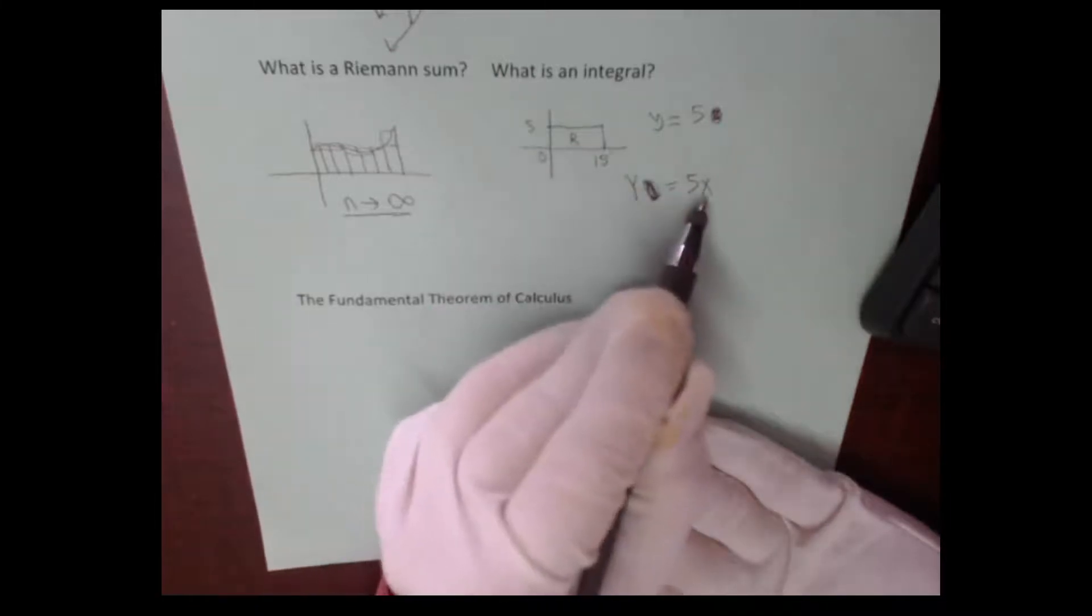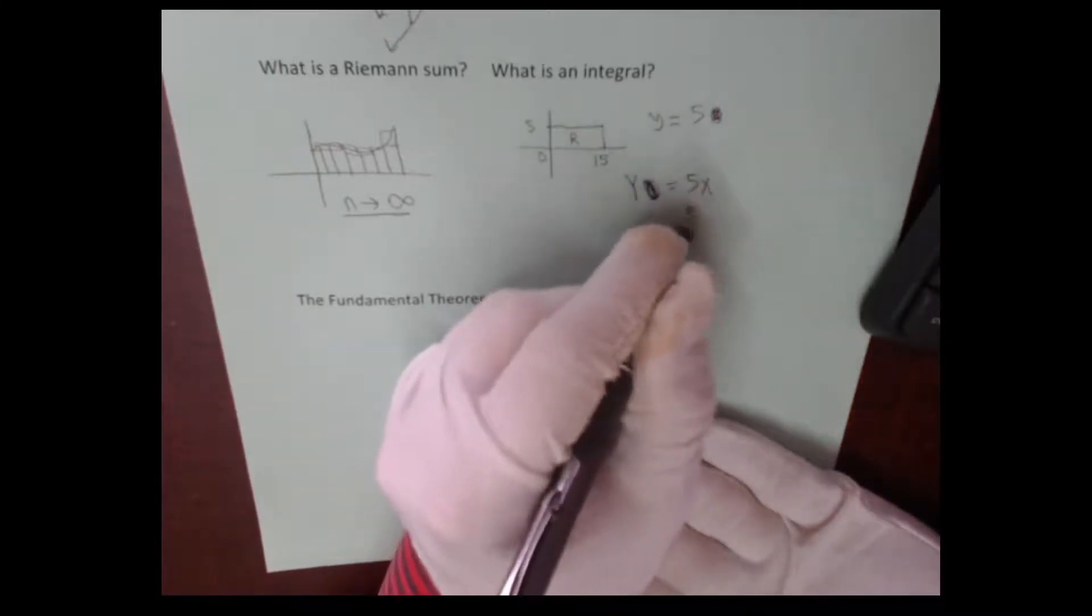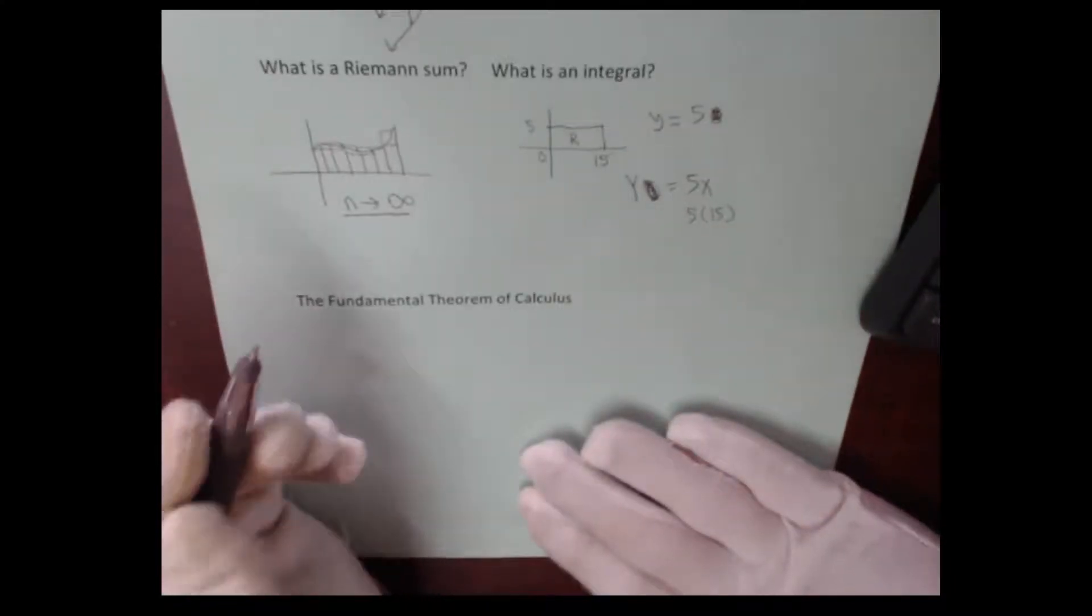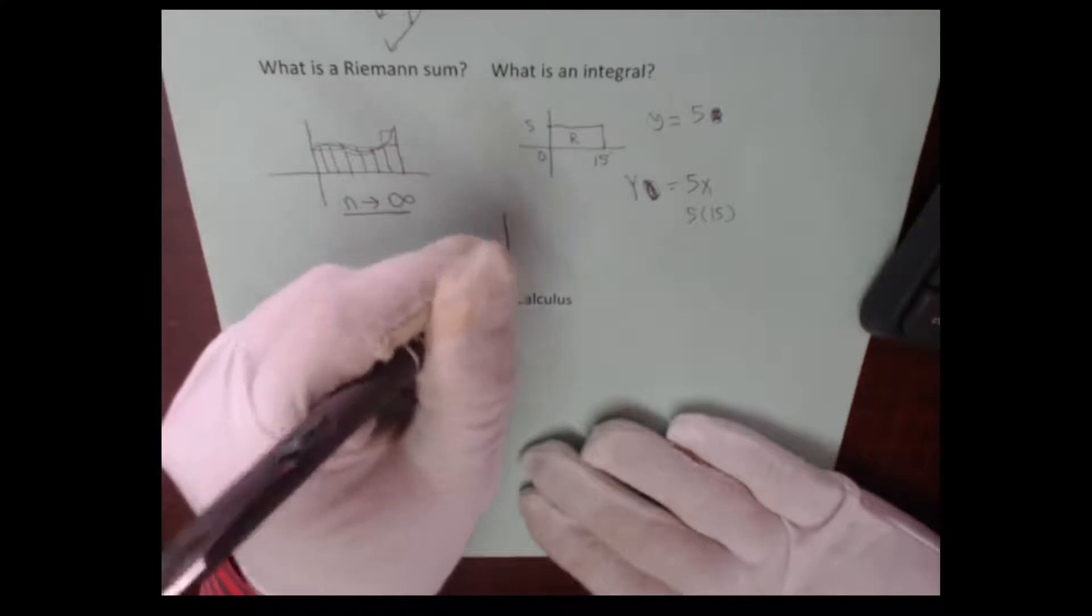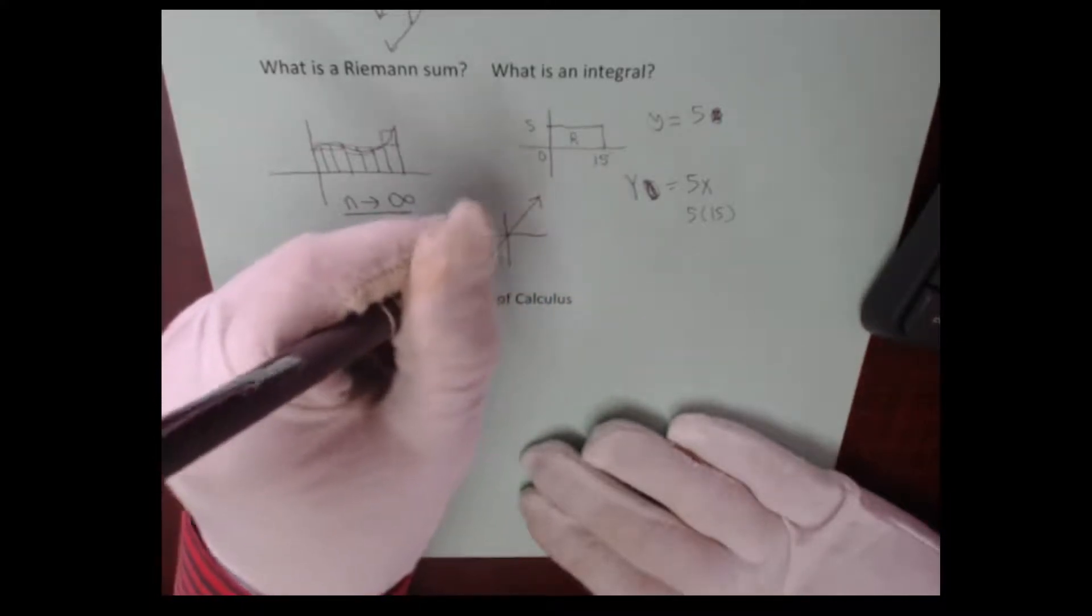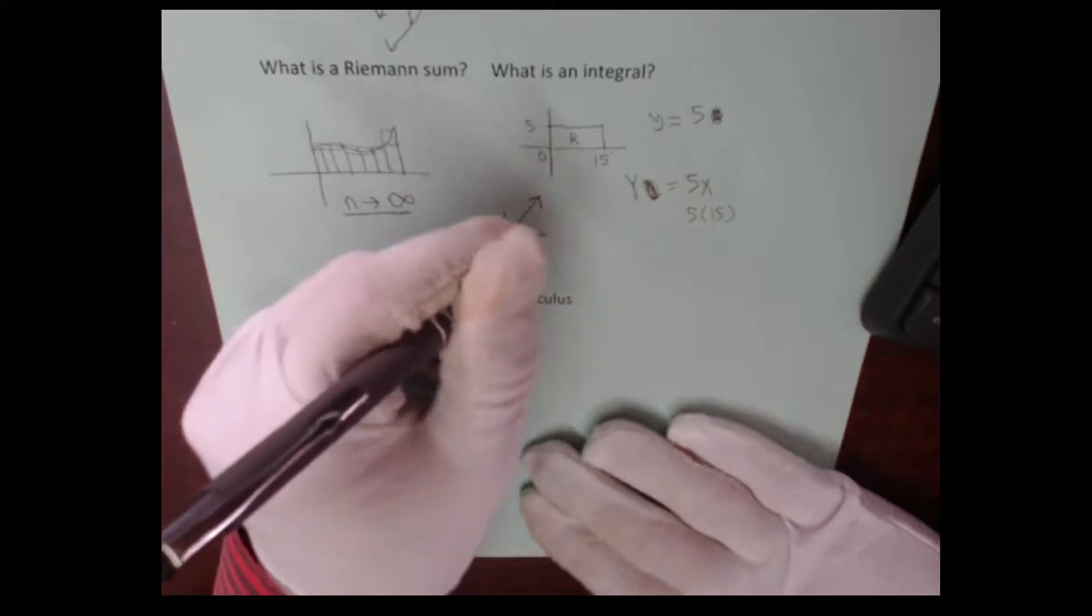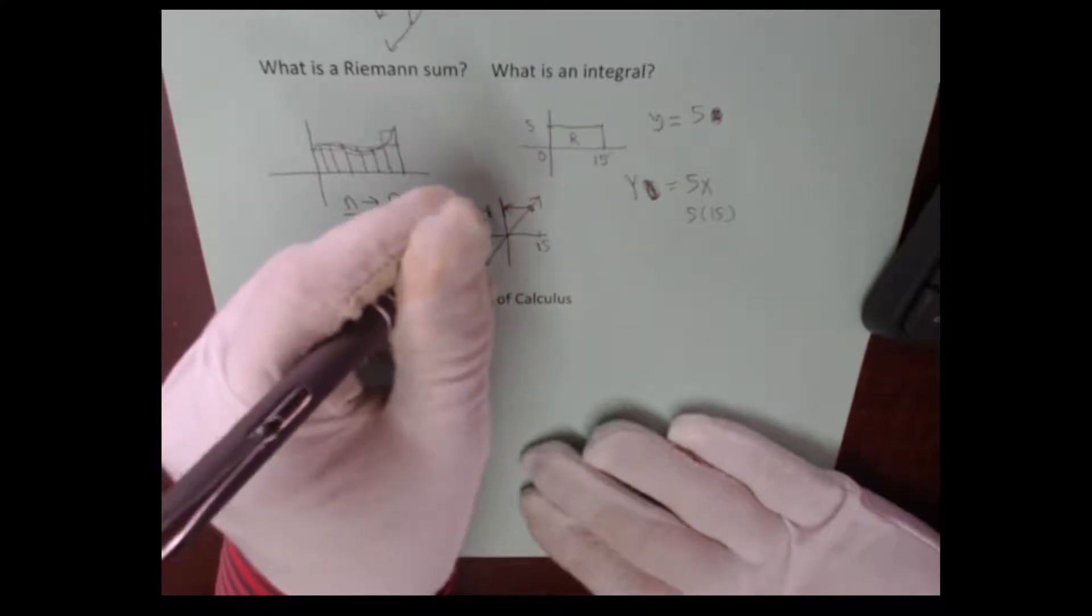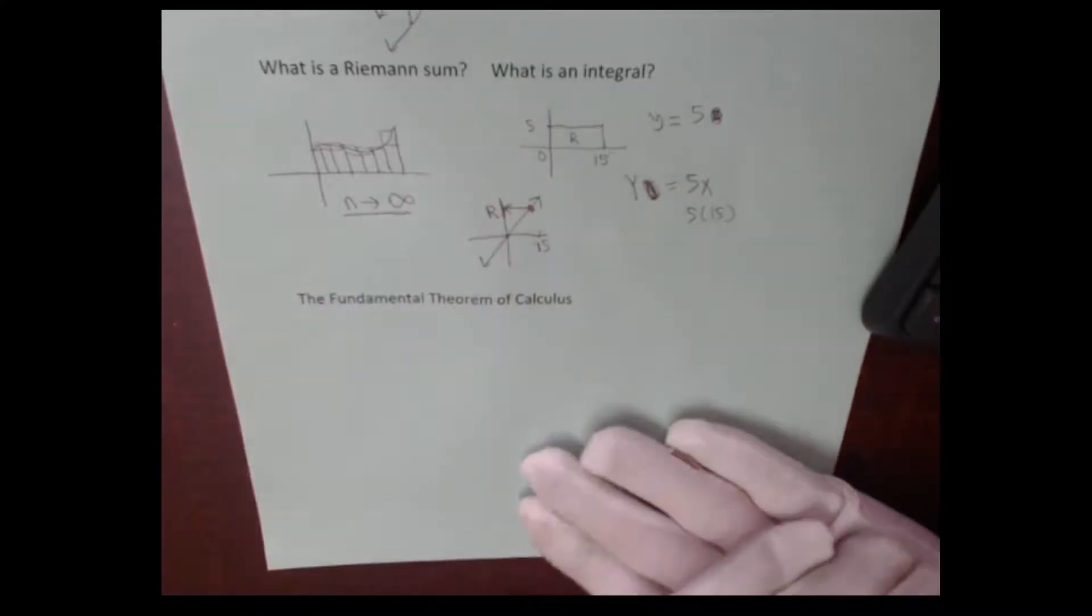So the antiderivative is 5x, the derivative of this equation is 5. So watch what happens when I put in the 15. Notice that I get base times height. And so the idea is, if you take the antiderivative of an equation, so here's the line y = 5x. If I go to 15 on the antiderivative, the value there is going to be the area of the rectangle.